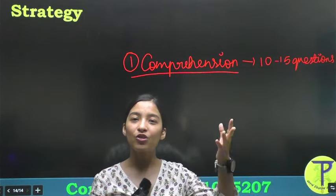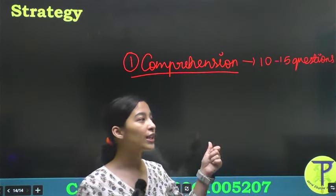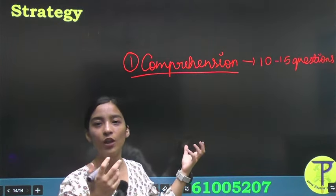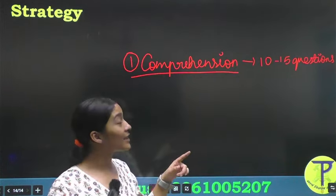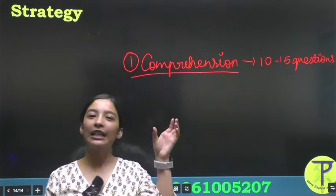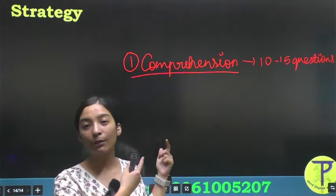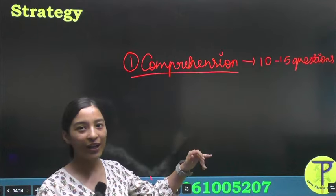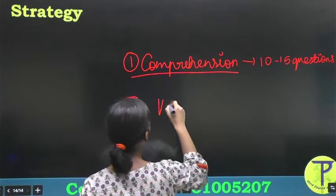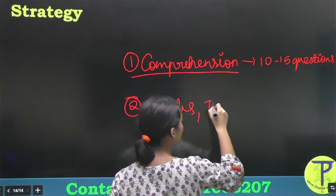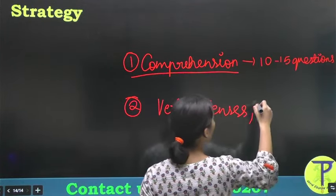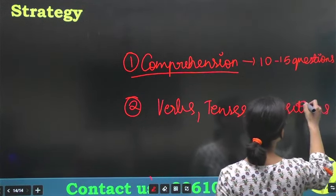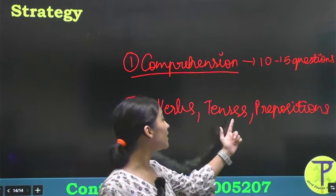You will have questions on synonyms and antonyms — they will ask you a word and ask what is the synonym, what is the nearest meaning, or what is the opposite meaning. The second topic is idioms and phrasal verbs; there will be some kind of idiom in the passage and they will ask you to tell the meaning of that idiom. So these topics will be covered within your comprehension. Topics such as verbs, tenses, and prepositions are all very important for this exam — their basic understanding is very important.